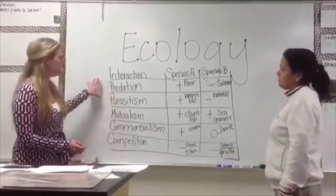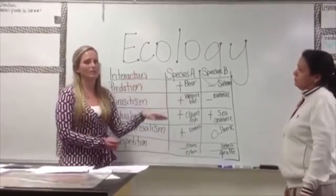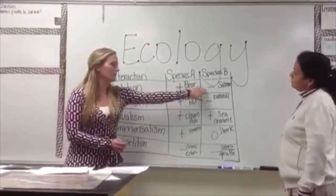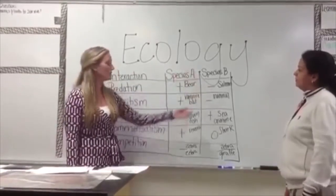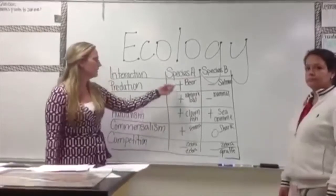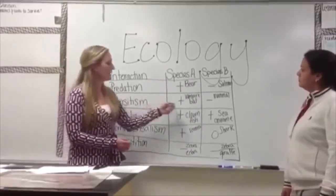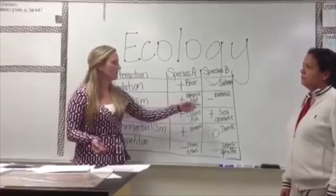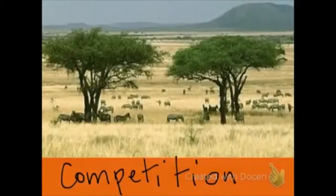Even though predation and parasitism both have a positive and a negative — where one is helped and one is hurt — they are not the same thing. With predation, the bear hunts the salmon, and the salmon is killed instantly. With parasitism, the vampire bat is not necessarily killing the mammal right away; it may kill him, it may not. But the bat is gaining while the mammal is slowly being hurt in that process.